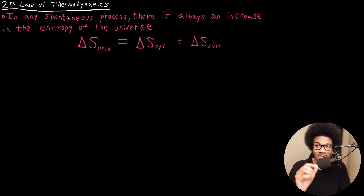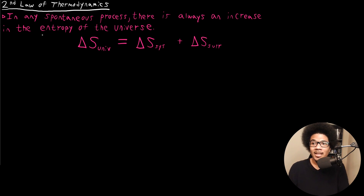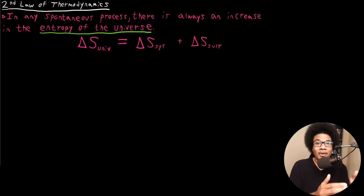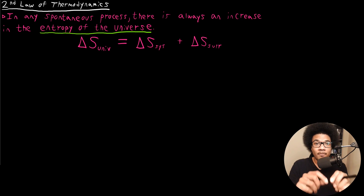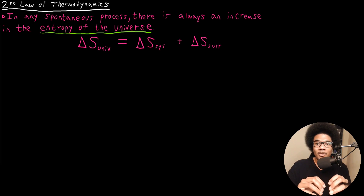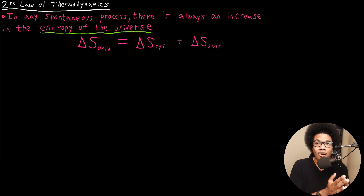What the second law of thermodynamics states is that in any spontaneous process, there's always an increase in the entropy of the universe. This language is very careful — the entropy of the universe. You can always find a singular process where entropy is actually decreasing. For example, the entropy of a solid is lower than the entropy of a liquid, so if you freeze something, you decrease the entropy of that substance. But the entropy of the universe is always increasing — there's going to be compensation for that entropy loss in the environment. This is a law of thermodynamics.